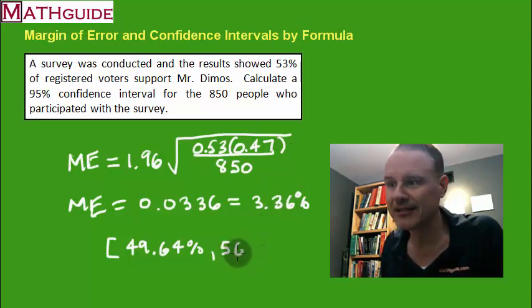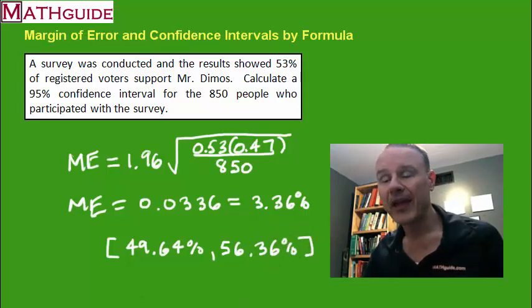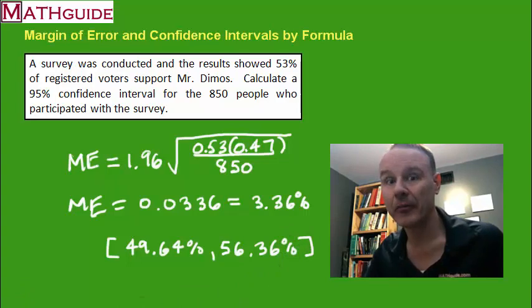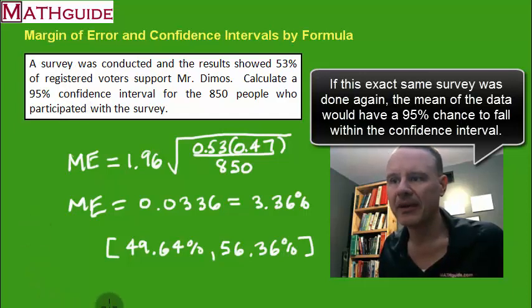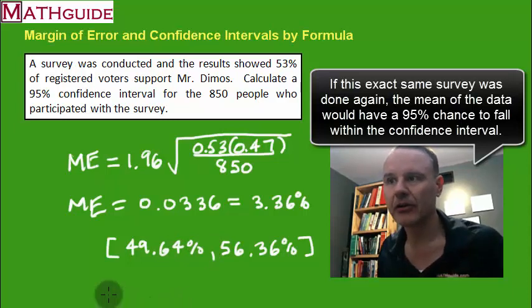Now a lot of people ask what does this confidence interval mean. You got to be careful here. It means exactly this: that if you were going to conduct the exact same survey and you were to ask 850 random people, random registered voters in this problem, it means that the mean of the data you would collect has a 95% chance of being in this range of values. That's what this means, and it's kind of a mouthful, but that's what the confidence interval means.